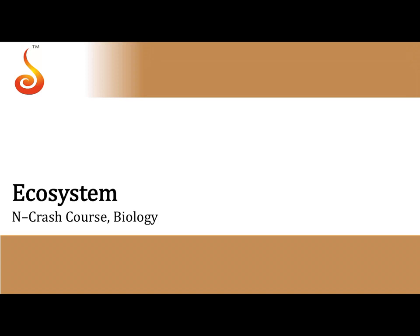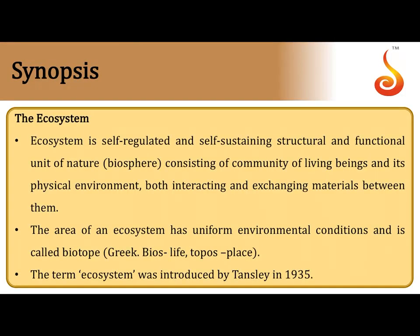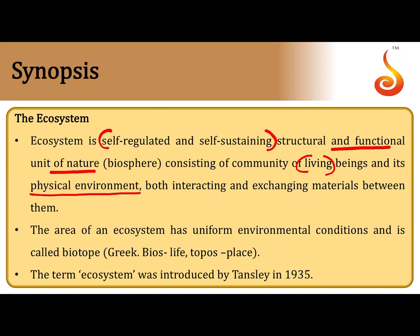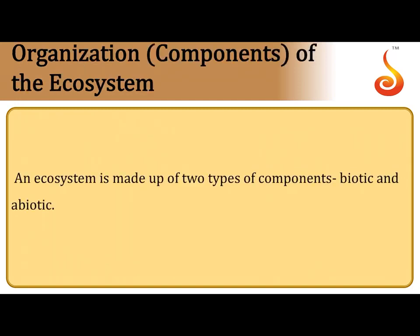Welcome to this crash course on biology. We will be discussing the synopsis of the chapter on ecosystems. An ecosystem is a self-regulated and self-sustaining structural and functional unit of nature. There is active interaction between living organisms and the physical environment. The area within an ecosystem where environmental conditions are uniform is called a biotope. The term ecosystem was introduced by Tansley in 1935.